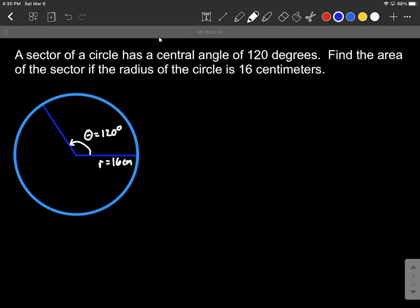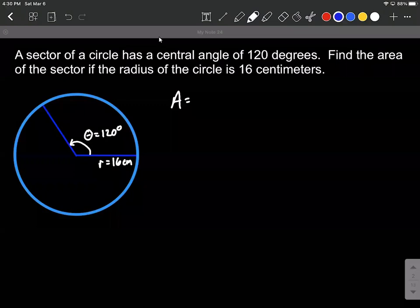Now, an important thing for using the formula, and our formula, by the way, is A equals one-half times theta times our radius squared. So using that formula, one very important thing is that theta is in radians.